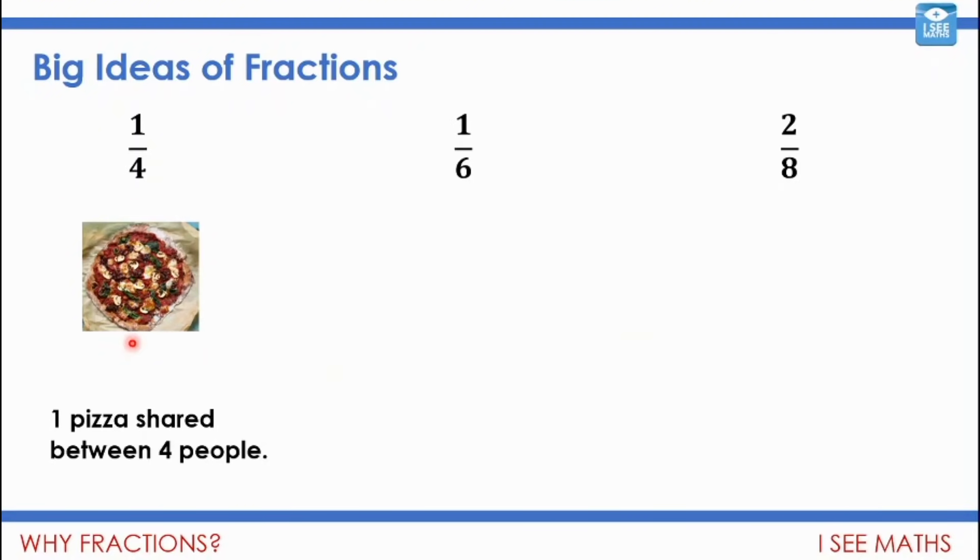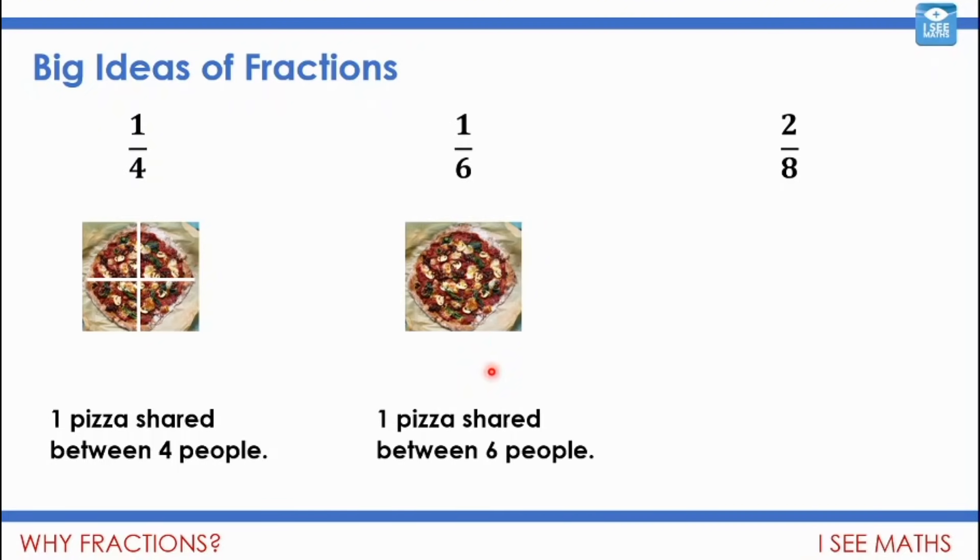Let's say we had one pizza. And this one pizza was shared between four people. Well, what we'd end up doing is we'd take that pizza and we'd cut it into four equal pieces. And they'd best be equal, otherwise I'm sure there'll be someone that wouldn't be happy. Now, I think that you would actually know as well that if you had one pizza and you were sharing it between six people, that you would know, well, you'd end up getting less than if it was one pizza shared between four people.